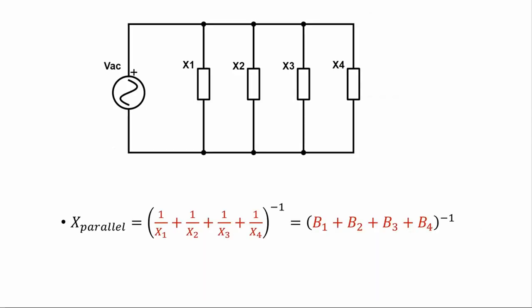To determine the total effect of parallel connected reactances, you could convert each reactance to a susceptance, then add susceptances and take the inverse of that result. Alternatively, the total susceptance of a set of parallel reactive components is simply the sum of the individual susceptances. This is very similar to the resistance-conductance relationship in DC circuits, but there are a couple of caveats when doing this.